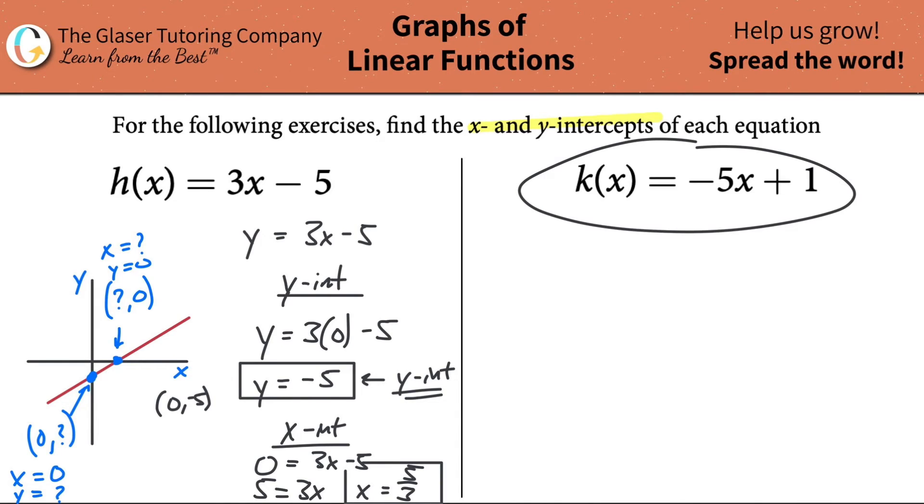So now watch how fast we can do this. Rewrite this, it's a function of x, call it y makes it a lot easier. Negative five x plus one. Let's talk about the y intercept first. Remember, the y intercept is when x is equal to zero. Memorize that.